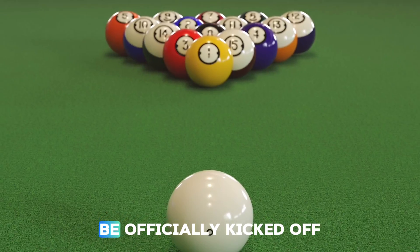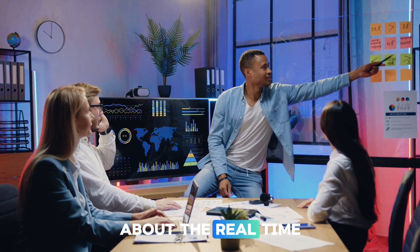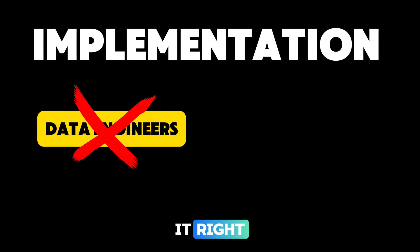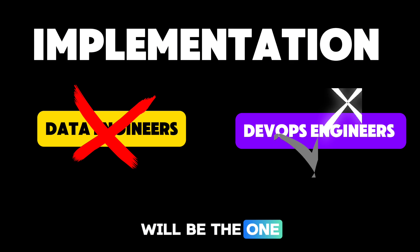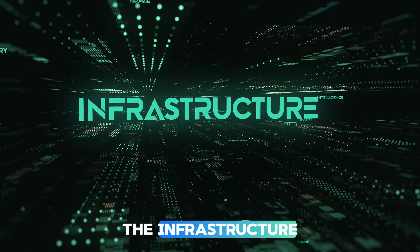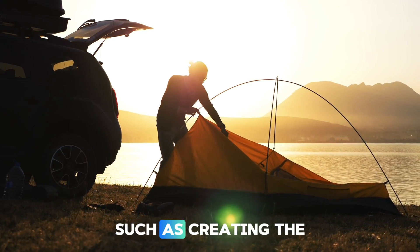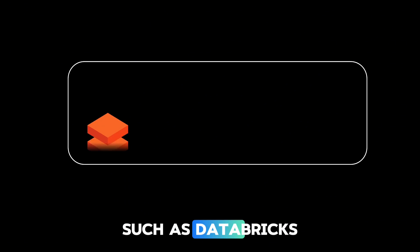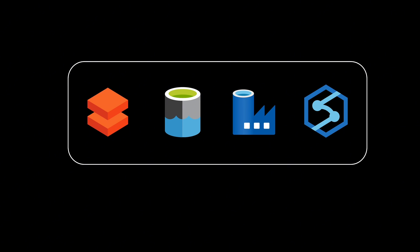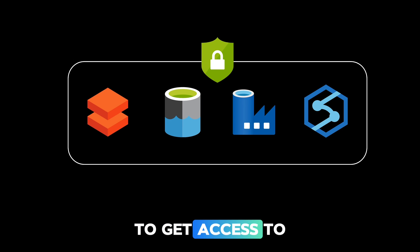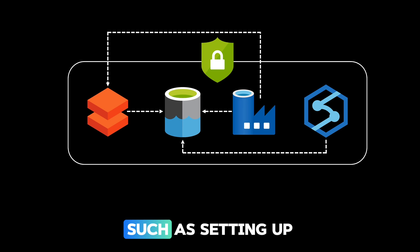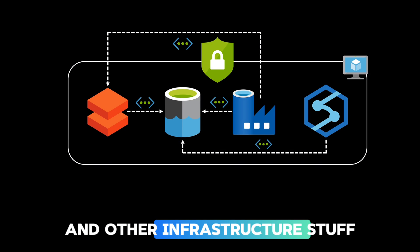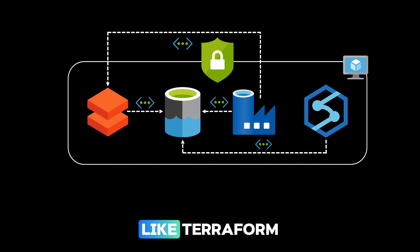In the actual implementation phase, the project is officially kicked off — but interestingly, data engineers will not be the ones initially working on it. Instead, the infrastructure team, such as DevOps engineers, will be the first to start. The first and foremost step for any data engineering project is to set up the infrastructure: creating the different resources and tools required such as Databricks, Data Lake, Data Factory, Synapse Analytics, etc., configuring security elements, and configuring networking of all resources such as setting up private endpoints, virtual machines, and other infrastructure. This infrastructure setup is often done using technologies like Terraform or Bicep templates.